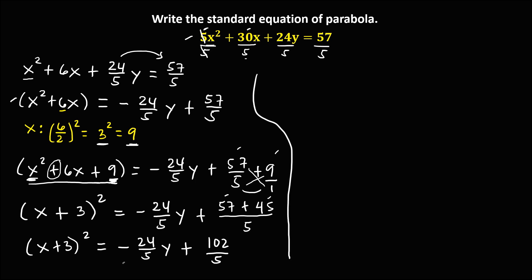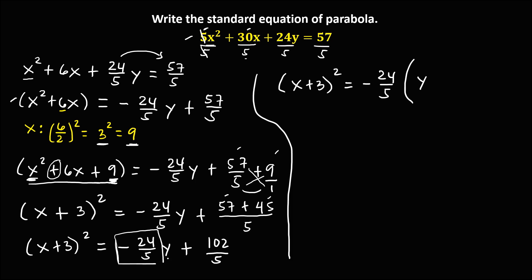So this is 102 over 5. This time, we need to put negative 24 over 5y outside as a factor. So we have x plus 3, quantity to the power 2, then equals. Put this negative 24 over 5y outside. The remaining term is y, then plus. This 102 over 5 — we need to divide this by the number we put outside, so divide by 24 over 5.